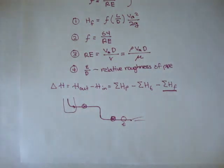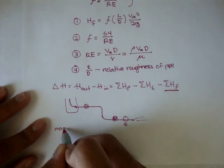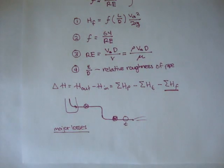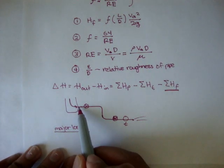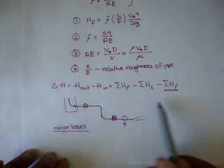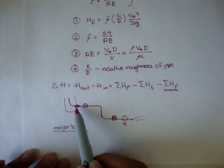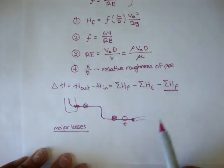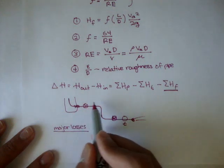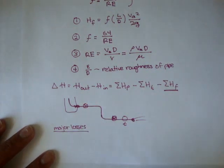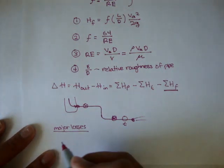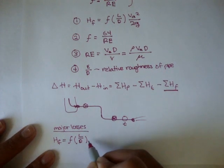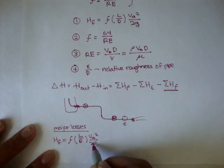We can divide losses into major losses and minor losses. Major losses are any losses associated with the pipe length. If the total pipe distance is a hundred feet, we use the roughness coefficient and frictional factor to calculate how much energy was lost. We use the formula HF equals the frictional factor times L over D times the average velocity squared over 2G.